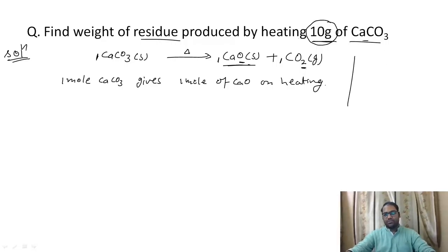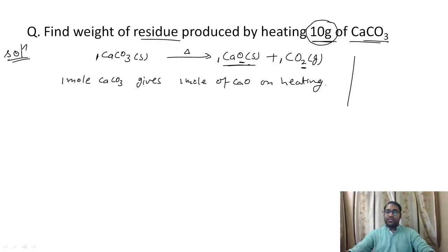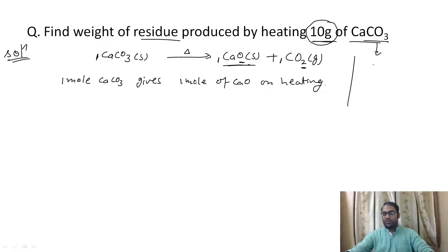In this question there are 10 grams of calcium carbonate. If we have the moles of calcium carbonate, then we can find the moles of calcium oxide. To get the number of moles of calcium carbonate, first of all we have to calculate the molar mass of calcium carbonate. The atomic weight of calcium is 40.